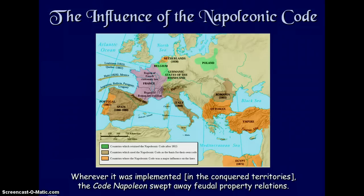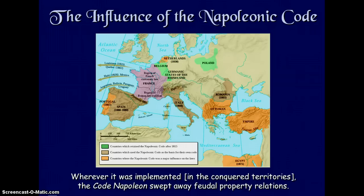Wherever it was implemented in conquered territories, the Napoleonic Code swept away feudal property relations. France was in control of Louisiana — that is why it is called the Louisiana Purchase. The Code was implemented in Louisiana in 1825, in Quebec in Canada, in Haiti, Argentina, Bolivia, Paraguay, and Uruguay — all countries that adopted the Napoleonic Code.